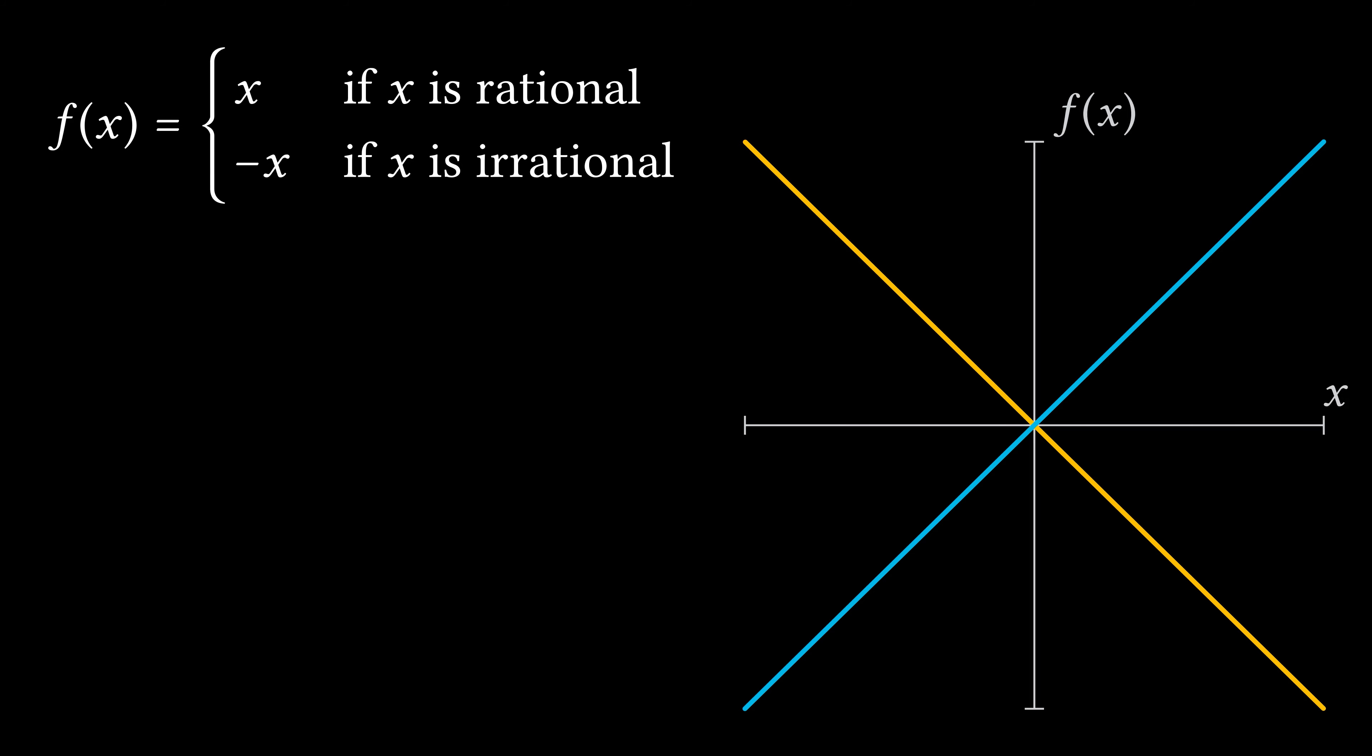Both branches look like solid lines because both rationals and irrationals are dense in the set of real numbers. A less accurate but more visually conceptual representation of the graph looks as follows. Do you see now at what point this function is continuous?